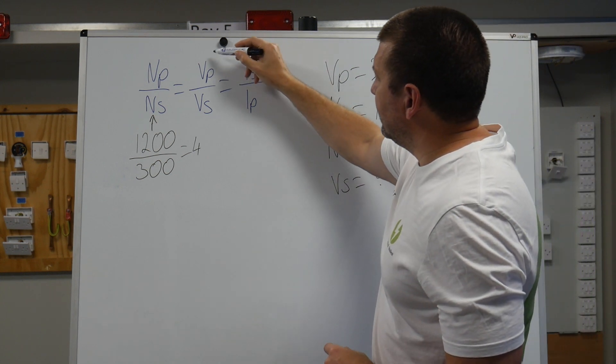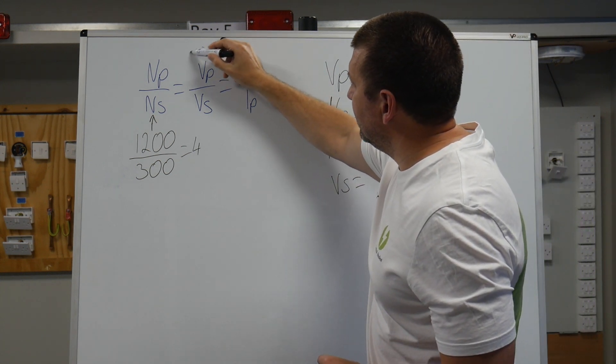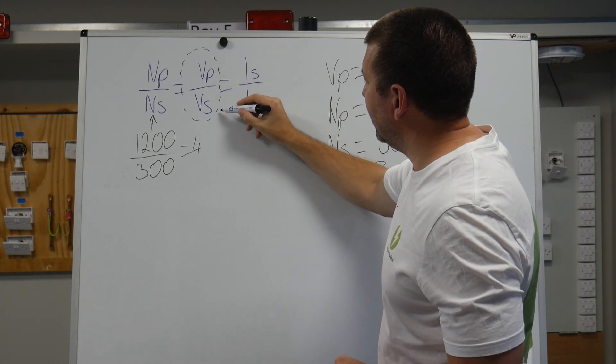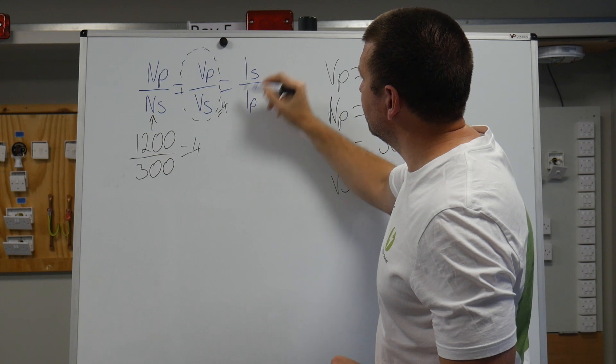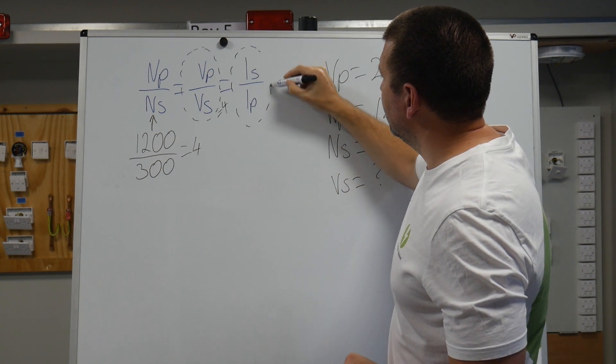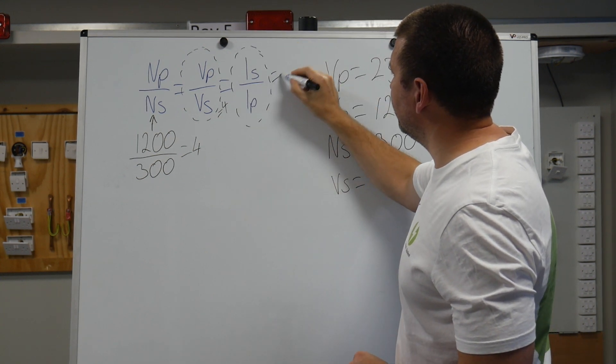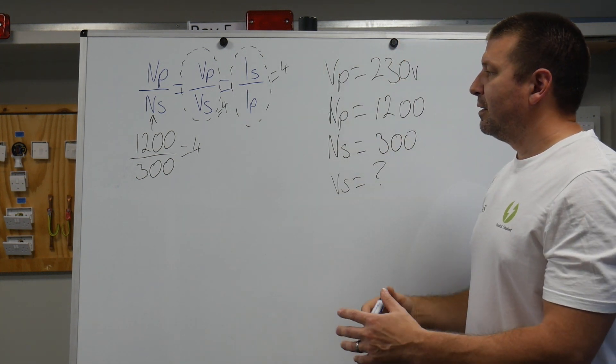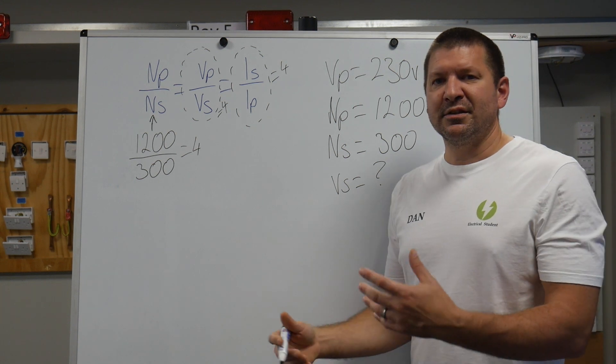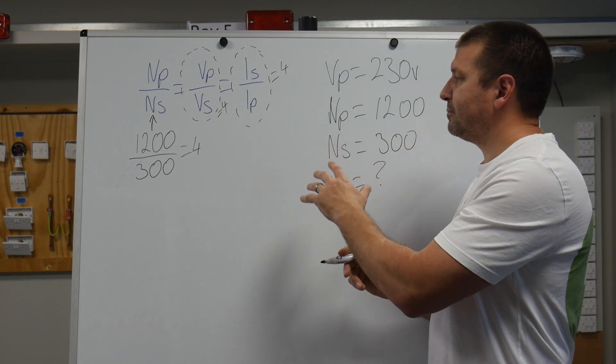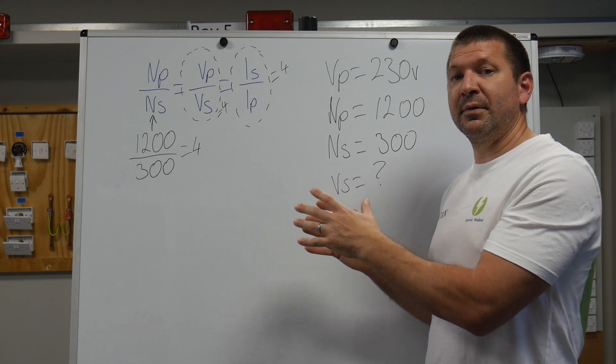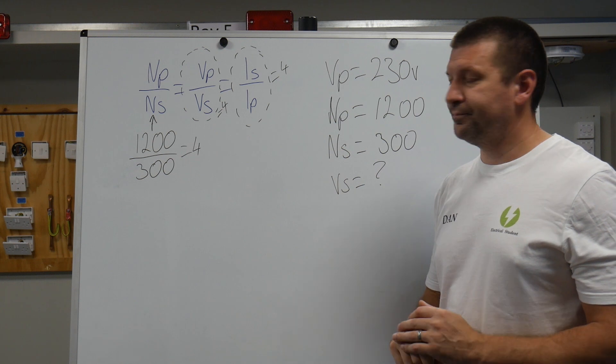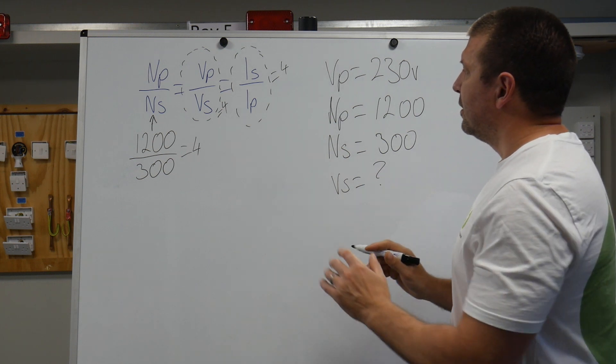So what we're saying is if I had a value for my Vp and Vs, this would also equal 4. And if I had Is and Ip and I divided those, that would also equal 4. Some people I've known say this is the golden number for the question. So for the minute, the golden number for this question is 4.